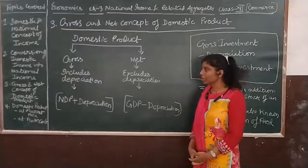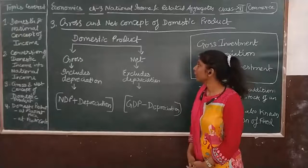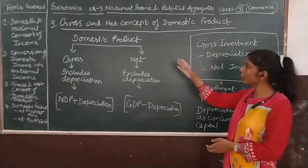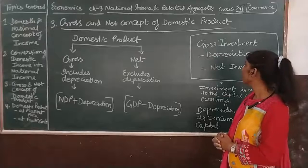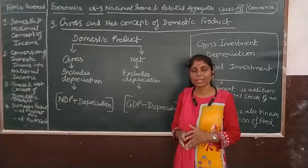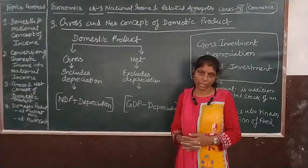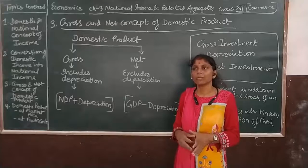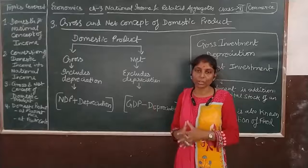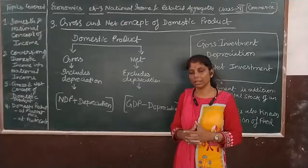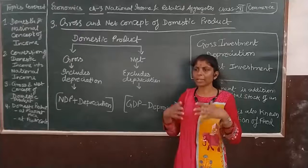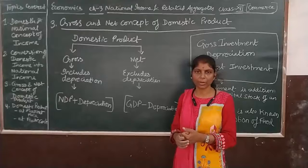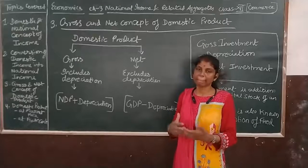Now we come to the third topic: gross and net concept of domestic product. Investment means addition to the capital stock of the economy — capital formation. When you invest in capital assets or increase the stock of inventory, that is capital formation. Depreciation means how much of the capital stock is consumed — it is also known as consumption of fixed capital. So investment means addition, and depreciation means consumption of the capital stock.